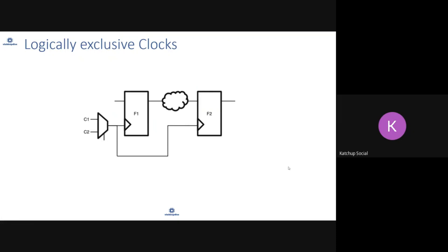There is another set of clocks known as logically exclusive clocks, which we had touched on a little bit but will talk about in more detail. Logically exclusive clocks are exclusive clocks, meaning either one clock is going to be present or the other clock is going to be present, and the reason for exclusivity is because of some logic present in the design — that's why it's called logical exclusivity.